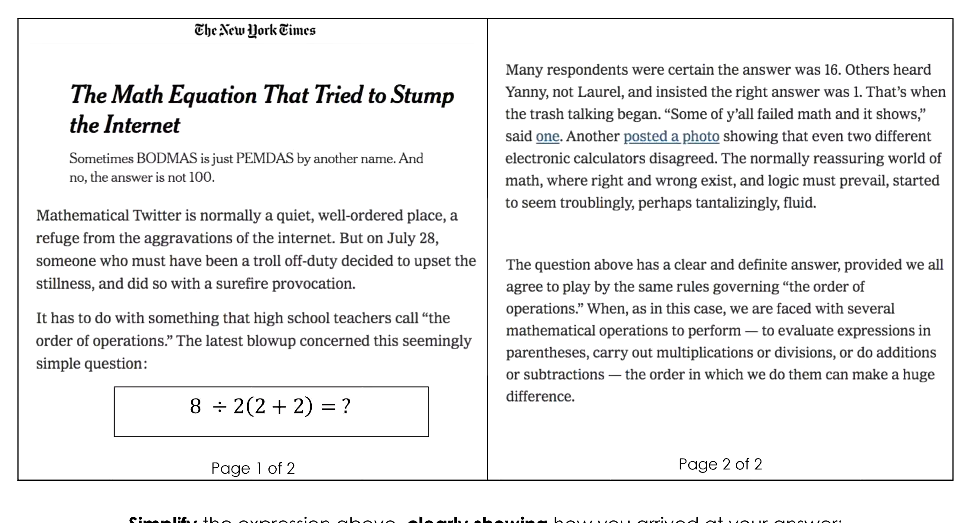But on July 28th, someone who must have been a troll off-duty decided to upset the stillness and did so with a surefire provocation. It has to do with something high school teachers call the order of operations. The latest blow-up concerned this seemingly simple equation: 8 ÷ 2(2 + 2).